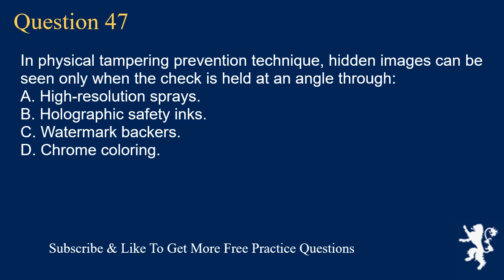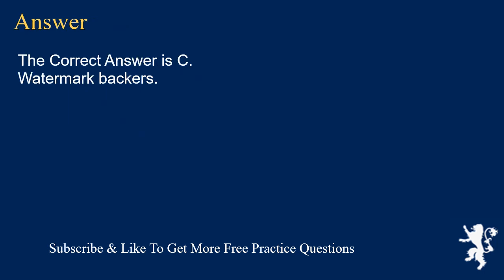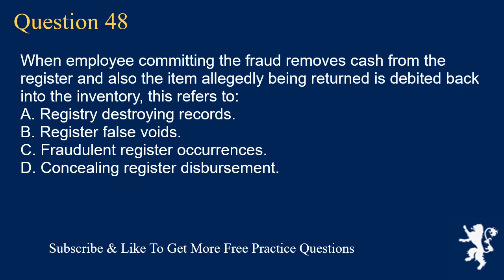Question 47: In physical tampering prevention technique, hidden images can be seen only when the check is held at an angle through: A. High-resolution sprays. B. Holographic safety inks. C. Watermark backers. D. Chrome coloring. The correct answer is C. Watermark backers.